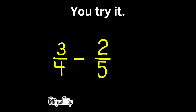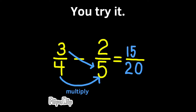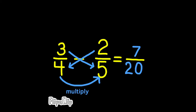Here's one more for you to try: 3 fourths minus 2 fifths. Go ahead and pause the video and give it a try. Let's see how you did. Remember, the first step is multiply the denominators. 4 times 5 is 20. The second step is multiply the left side numerator by the right side denominator. 3 times 5 is 15. Third step, multiply the right side numerator by the left side denominator. 2 times 4 is 8. This represents 15 twentieths minus 8 twentieths, and that is equal to 7 twentieths.